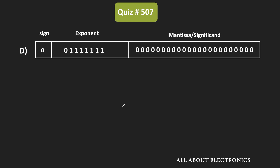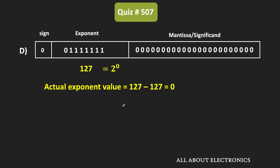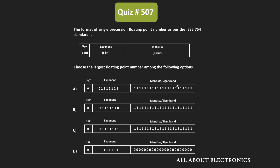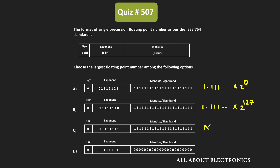For option D, the biased exponent is again 127. Subtracting the bias, the actual exponent value is 0, or 2 to the power 0. So the actual normalized number is 1 followed by the mantissa part times 2 to the power 0, which equals 1. So to summarize: option A equals 1.111...1 × 2^0, option C is Not a Number, and option D equals 1. From the given four options, option B is the largest number, and therefore B is the correct answer.